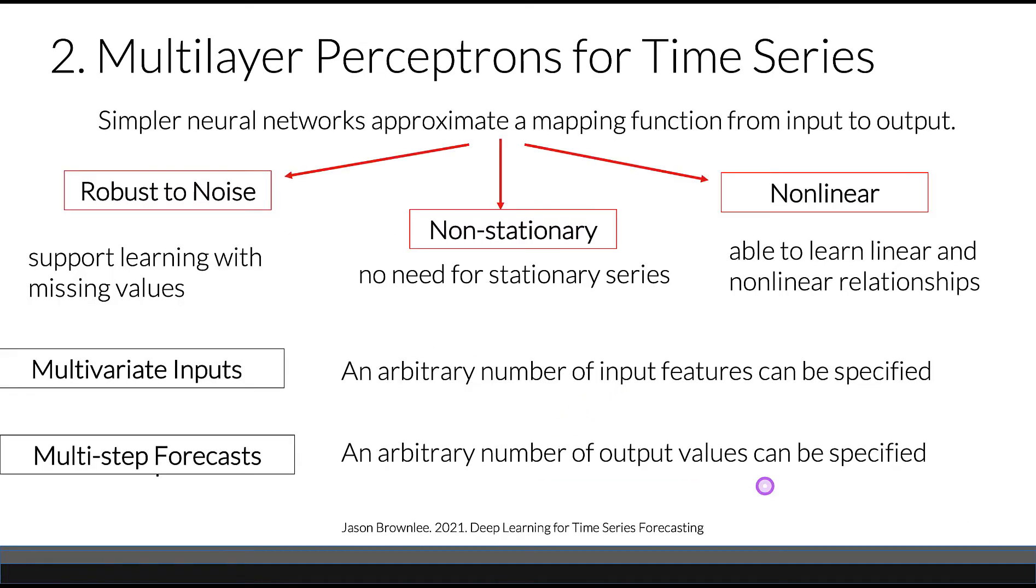Neural networks are valuable for time series for a number of reasons. A simple neural network, such as multilayer perceptrons, approximate a mapping function from input variables to output variables. They're generally robust to noise, which means they support learning with missing values.